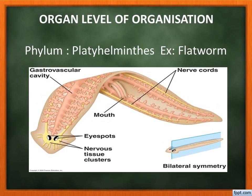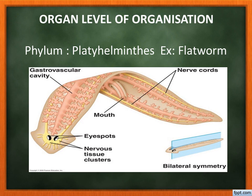Organ level of organization: a group of tissues forms an organ that performs one particular function. This kind of organization first appeared in phylum Platyhelminthes. Example: flatworm. It consists of certain organs, each performing its own function. This is called organ level of organization.